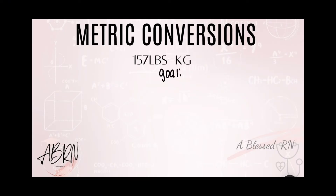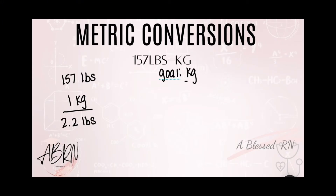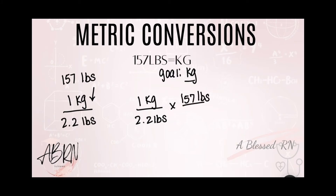157 pounds — how many kilograms is that? Our goal is kilograms. Our puzzle pieces are the 157 pounds and the conversion of 1 kilogram equals 2.2 pounds. This is a golden conversion — you need it a lot in dosage calc. So our goal says to start with kg, which goes first on top. 1 kg equals 2.2 pounds. Now I'll put pounds on top to cross out with pounds at the bottom. Multiply across the top, multiply across the bottom, divide the top by the bottom, and you get 71.36 kilograms.